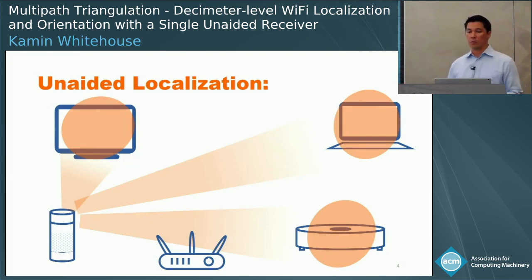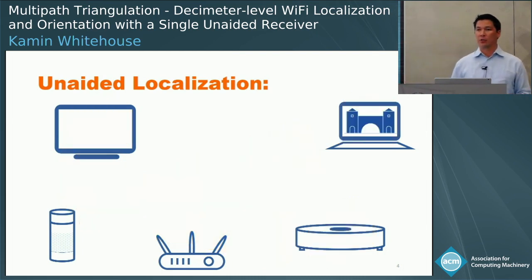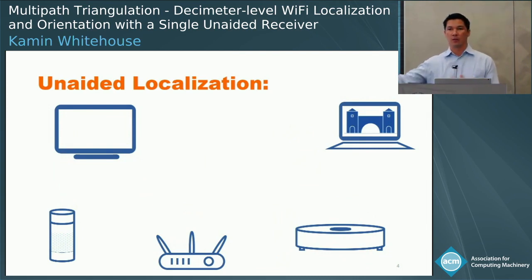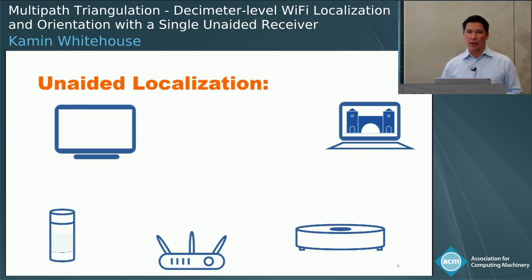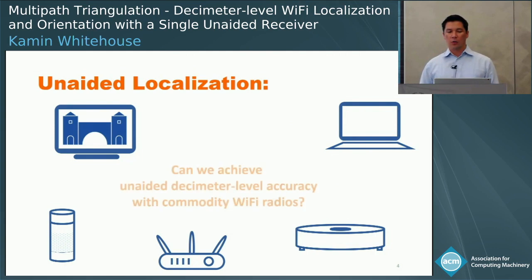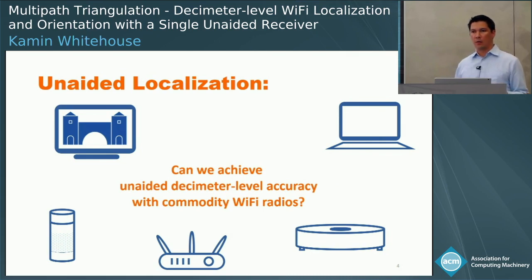This would enable a number of new context-based applications. For example, if you asked your smart speaker to show you pictures of Munich, it could cast that picture to your laptop if it detected your voice coming from the kitchen, because it knows where the laptop is. Or to the living room television if you're there, because it knows the orientation of that device. The question we were trying to answer is: could we achieve unaided localization with decimeter-level accuracy using commodity radios?